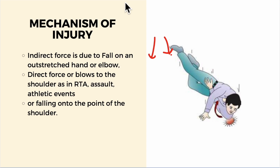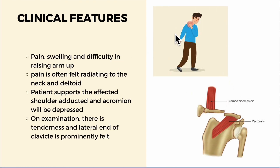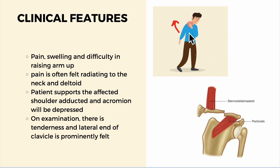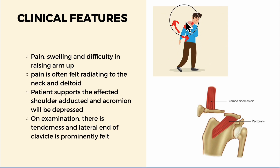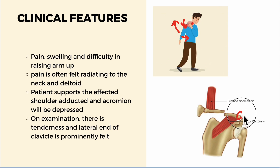Looking at some of the clinical features: pain, swelling, and difficulty in raising the arm up are the main features. Pain is often felt radiating to the neck and the deltoid region. The patient supports the affected shoulder, adducted, and the acromion will be depressed — that will be the usual patient presentation. On examination there is tenderness and the lateral end of the clavicle is prominently felt.